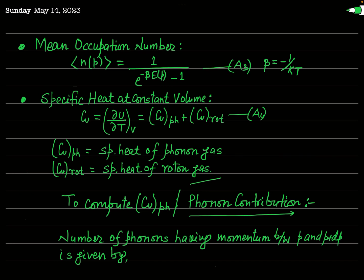Apart from that, we also saw that the mean occupation number, denoted by N(P), is given by 1 over [e to the power (beta times E(P)) minus 1], where beta is equal to 1 over kT. As we have seen, the specific heat at constant volume for liquid helium 2 is contributed by both excitations — phonons and rotons — so the total specific heat capacity is Cv = Cv_phonon + Cv_roton, giving the total specific heat capacity at constant volume of liquid helium 2.